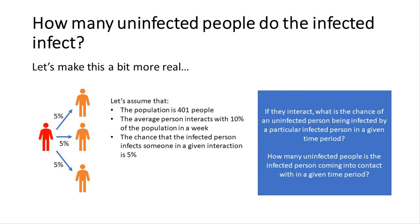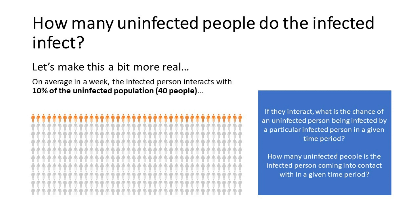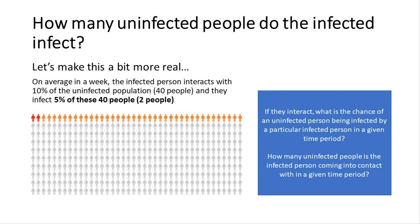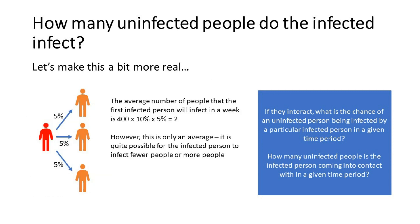Let's make this concrete with actual numbers. Assume the population is 401 people, the average person interacts with 10% of the population in a week, and the chance of infecting someone in any given interaction is 5%. Our infected person interacts with 10% of 400 uninfected people — that's 40 people, shown in orange. Of those 40, only about 5% will actually get infected — so just two people, shown in red. The maths: 400 × 10% × 5% = 2 people.